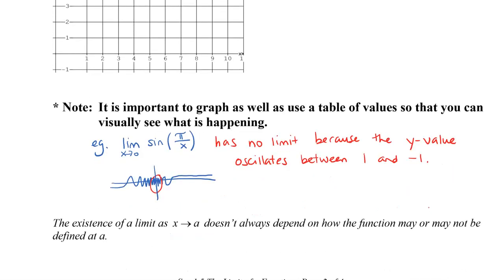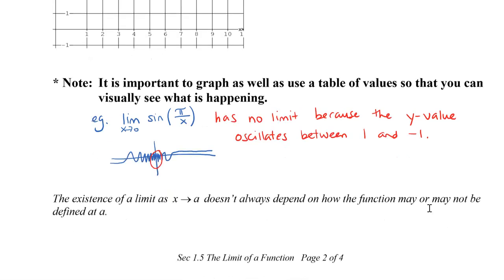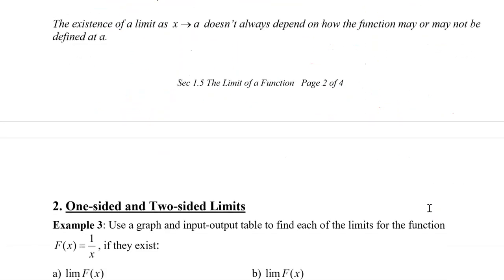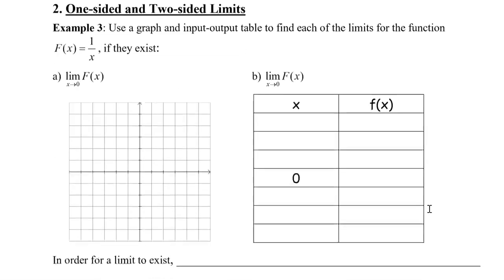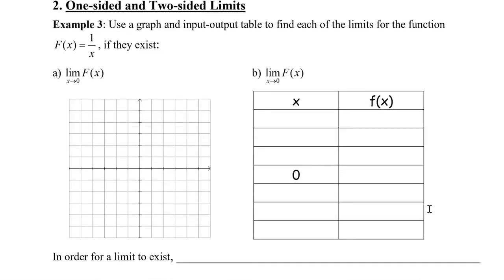The existence of a limit as x approaches 0 doesn't always depend on how the function may or may not be defined at a. We're going to look at what it means to have one-sided and two-sided limits, using the example of the function 1 over x. We'll graph it and create an input and output table to see what happens.